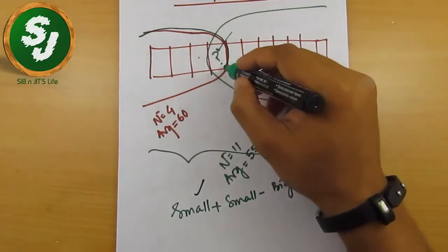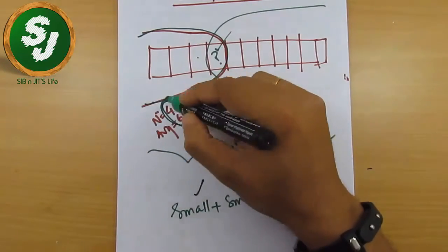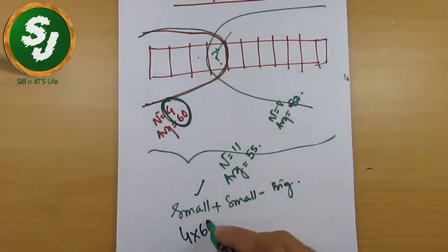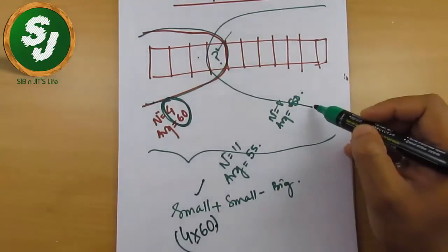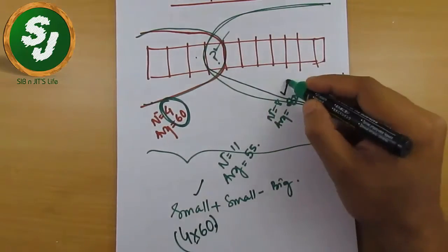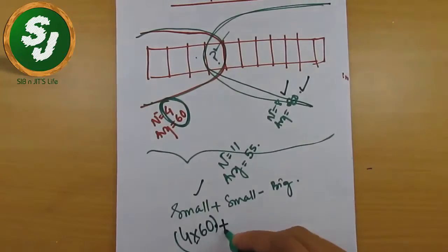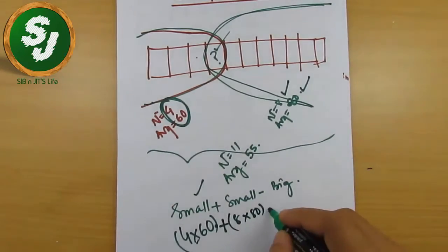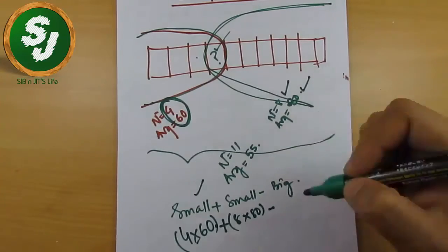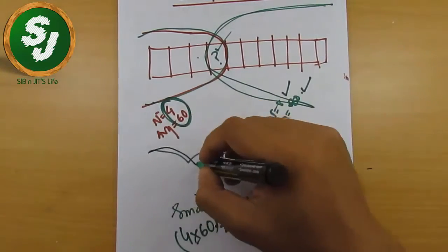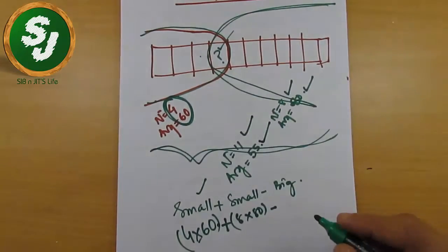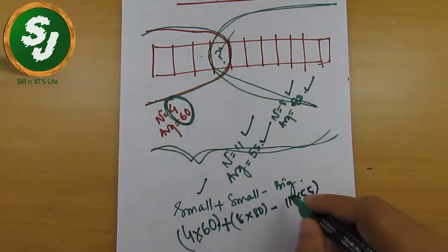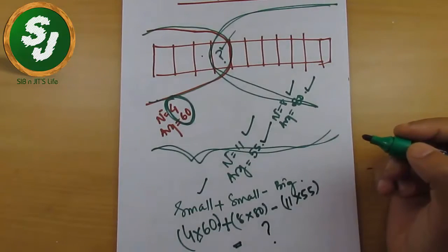What exactly is 'small'? Small means the small section. Its sum is found by applying the golden rule: 4 into 60. The second small section: n is 8, average is 80, so 8 into 80. And big means all the numbers: n is 11, average is 55, so 11 into 55. Whatever value comes — positive or negative — that is your answer.